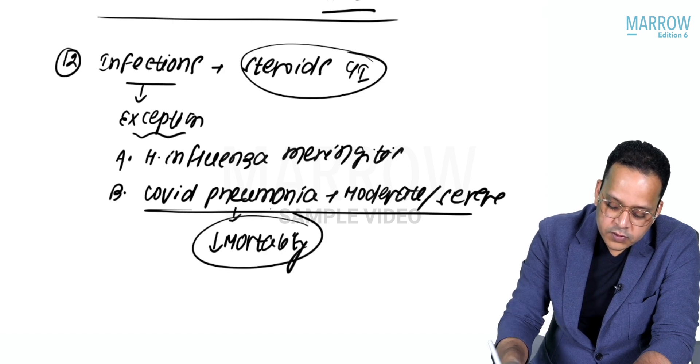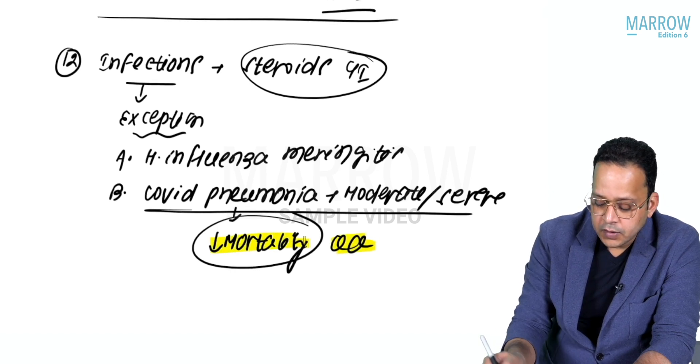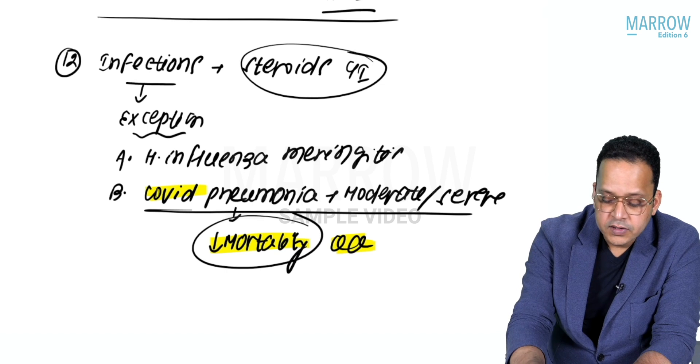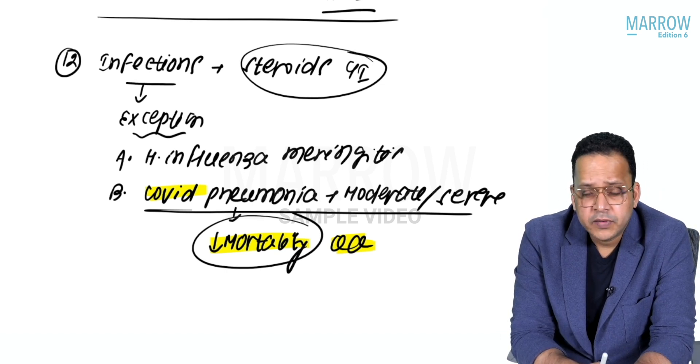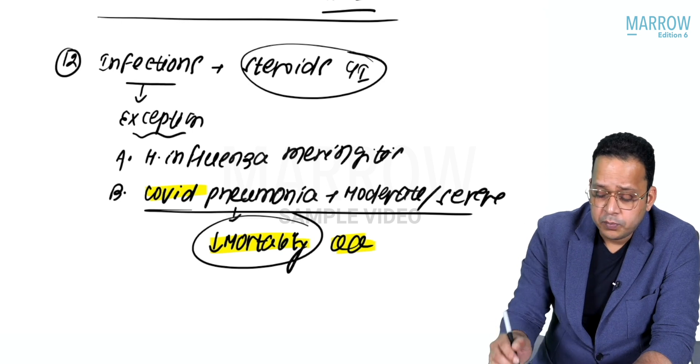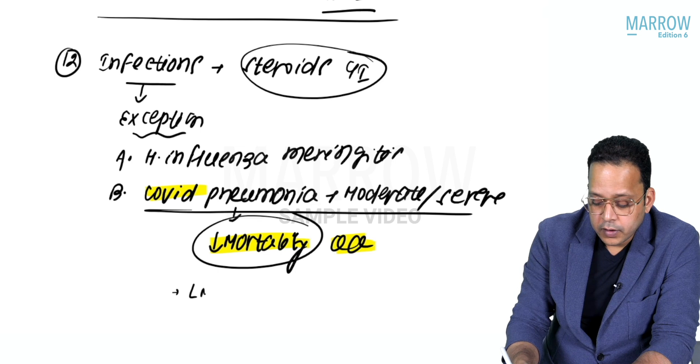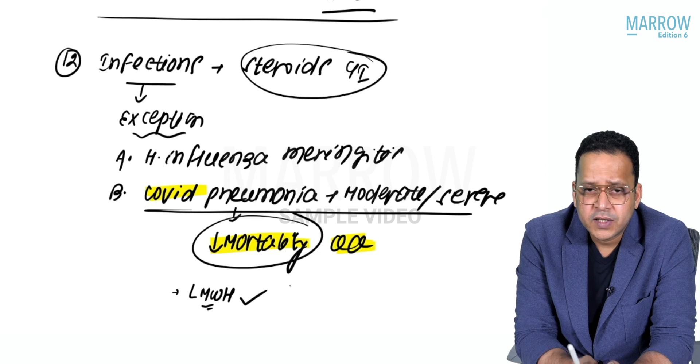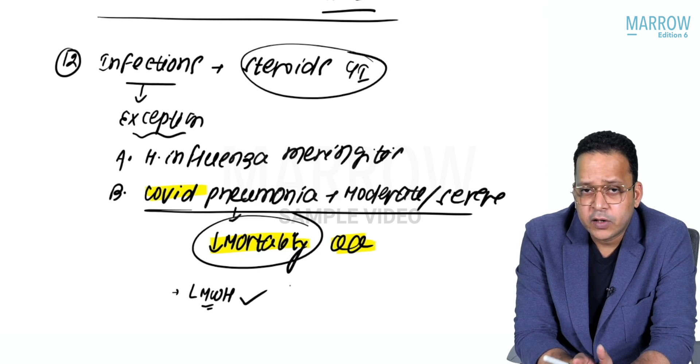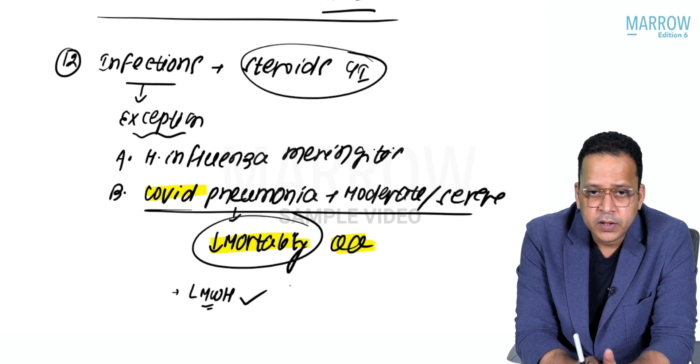This MCQ has been asked in exams: which is the only drug to decrease mortality in COVID? Your answer is steroids. In COVID, if they ask decrease in mortality, your best answer is steroid. If steroid is not in the option, then go for LMWH because there is hypercoagulation, but the best answer is steroid.